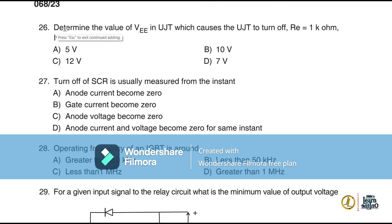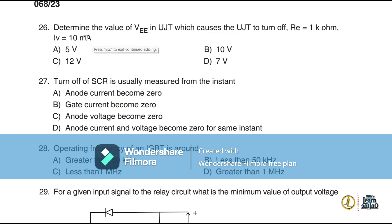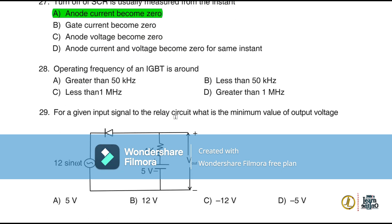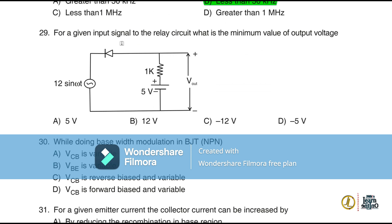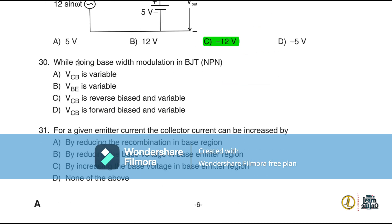Superposition theorem is applicable only to circuits having linear and bilateral elements. In a UJT, the value of VBB that causes it to turn off: with RE = 1 kΩ and IV = 10 mA, the answer is 12 V. Turn-off of an SCR is measured from the instant anode current becomes zero. Operating frequency of an IGBT is less than 50 kHz. The minimum output voltage for a given relay circuit input involves base width modulation in an NPN BJT with VCB reverse bias.